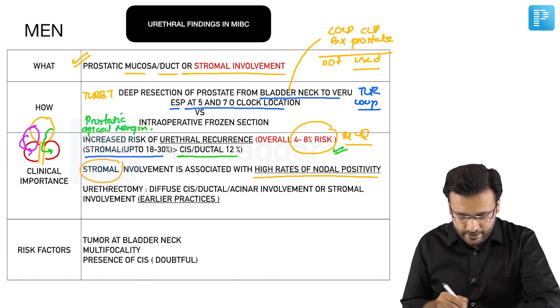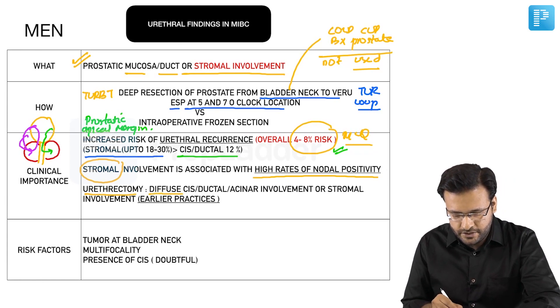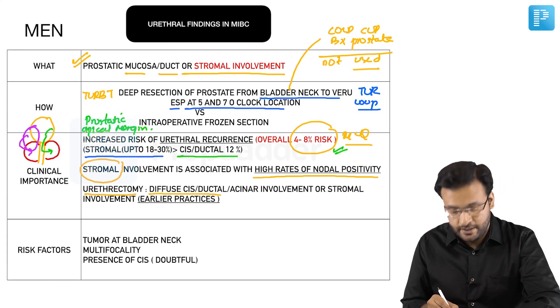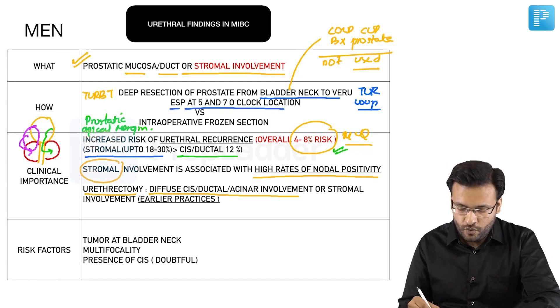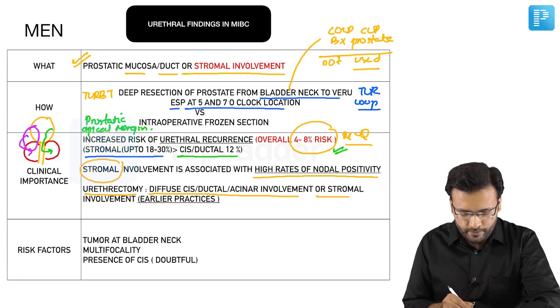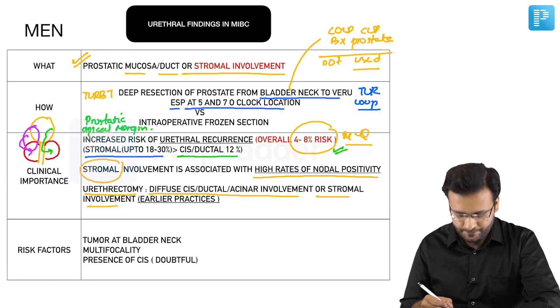Earlier practice recommended that complete urethrectomy — total urethrectomy — be performed in patients who have diffuse carcinoma in situ, ductal or acinar involvement of the prostate, or stromal involvement. This was the earlier practice.